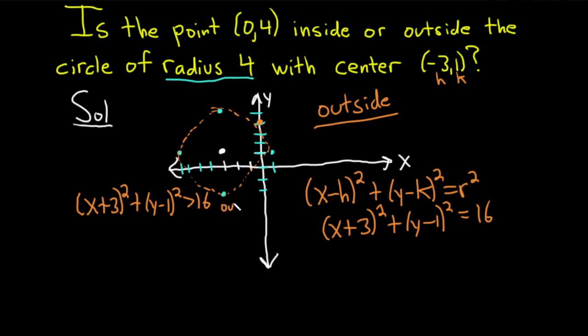So if I have an ordered pair and I plug them in here, and the result is greater than 16, it's going to lie outside the circle. If it's less than 16, it's going to lie inside the circle.